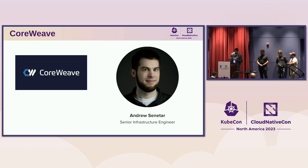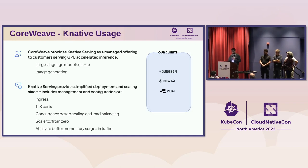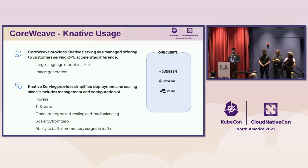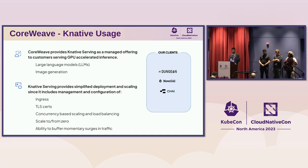I'm Andrew Sinatar, and I work for CoreWeave, a GPU-focused cloud provider — HPC rendering, things like that. We use Knative for a managed service that allows our customers to run serverless-style workloads. Most of our customers are using Knative to serve large language models and image generation. One of the reasons they like to use these is the ability to scale up and down, scale to zero. Some of them deploy a lot of fine tunes that don't get a lot of usage, so scale to zero is pretty important. Knative serving provides a very simplified deployment for them, handling the scaling, the ingress — everything all in one. That's the really big driver for Knative usage there.